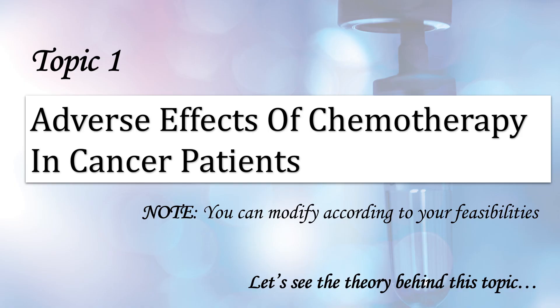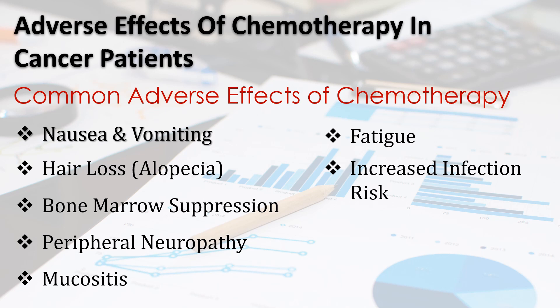Our first topic is adverse effects of chemotherapy in cancer patients. Chemotherapy is one of the most effective treatments for cancer, but it comes with a range of side effects that impact patients' daily lives. We'll explore the most common chemotherapy-related adverse effects and how they can be managed. First up, nausea and vomiting — this affects up to 80% of patients on chemo. It's one of the most distressing side effects, but it can be managed well with antiemetics like ondansetron or metoclopramide.